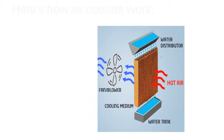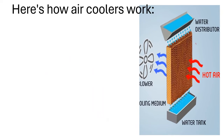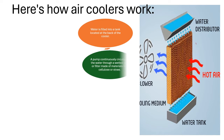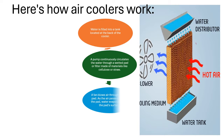Here is how air coolers work. Water is filled into a tank located at the back of the cooler. A pump continuously circulates the water through a wetted pad or filter made of materials like cellulose or straw. A fan blows air through the wet pad. As the air passes through the pad,